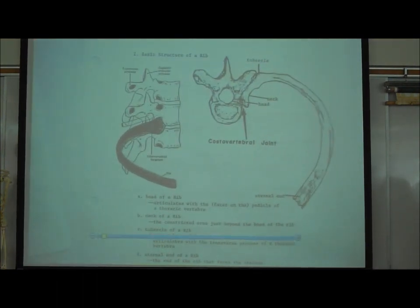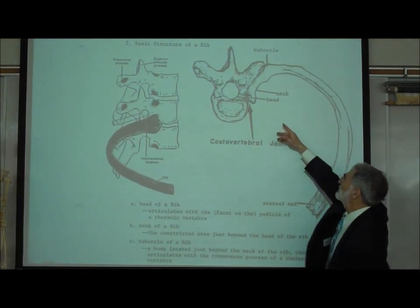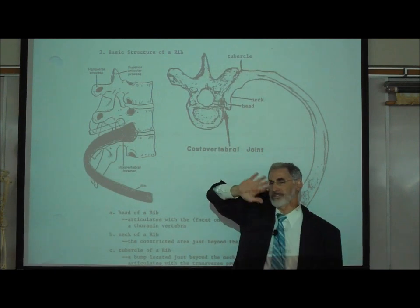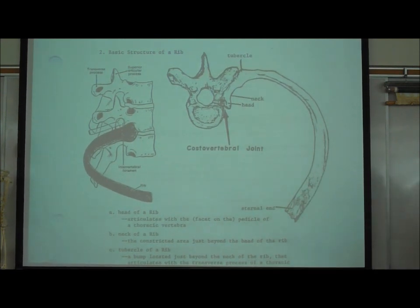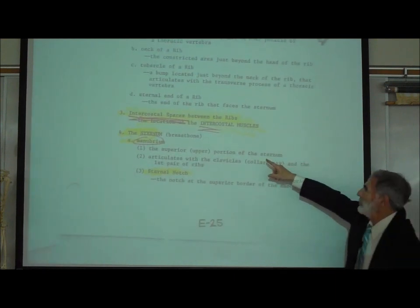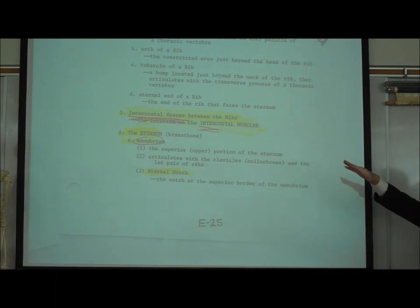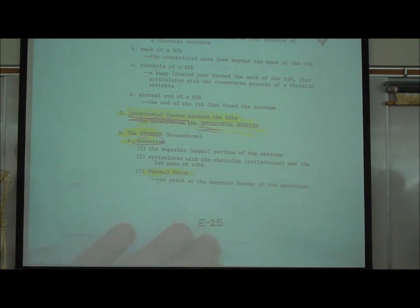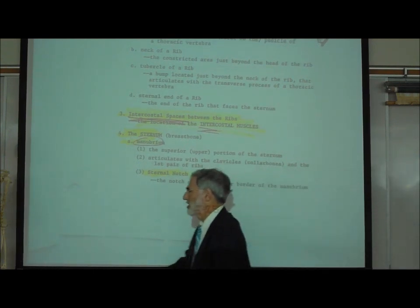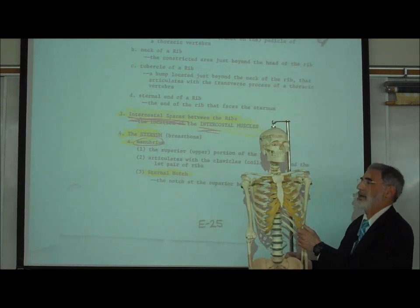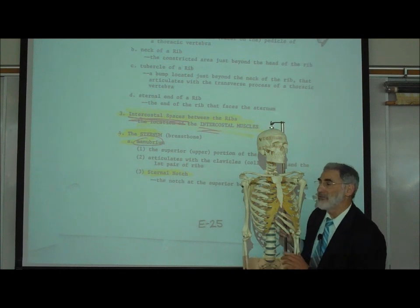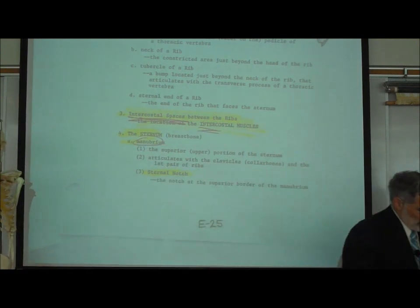On page E25, it shows how the ribs attach to the thoracic vertebrae via the head, neck, and tubercle of the rib, attaching to a small facet on the sides of the thoracic vertebrae. Also in the intercostal spaces are muscles called intercostal muscles. The sternum or breast bone is actually formed from three bones that fuse together during embryologic development: the upper manubrium, the middle body of the sternum, and the lower xiphoid process.